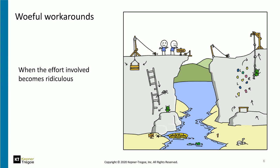Sometimes the effort involved does become rather ridiculous. We make an adaptive fix — in this case the bridge is gone in the diagram. Then we see another issue and add another workaround, and then another, and we keep going backwards to see if that fixes the problem. When the effort involved becomes ridiculous, as in this picture, working around not having a bridge across the gorge is quite a nuisance — and I'm sure you've got things like that in your life.